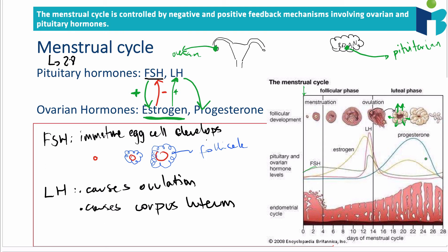Estrogen and progesterone are important for preparing the uterus. In the follicular phase, where FSH is the main pituitary hormone, estrogen builds up the thickness of the uterine lining. In the second phase, progesterone maintains that thickness. This is in preparation for implantation: since an egg has been released, if fertilization occurs, the egg cell needs to be able to implant in the uterus.